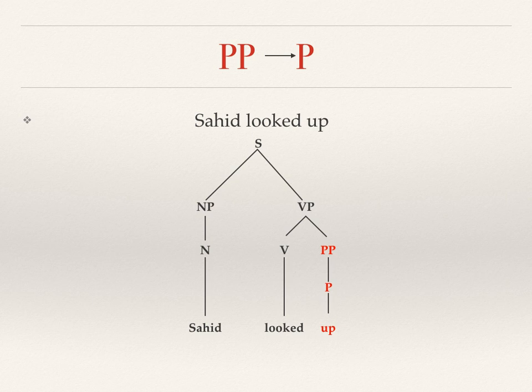In the verb phrase, you can split it into two sides. The first is the verb, for 'looked,' and then the prepositional phrase. The prepositional phrase is represented by 'up.' So, as simple as that.